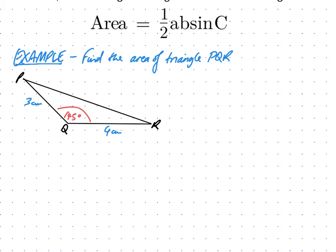So let's fill in that formula. Area equals 1/2 A, we're going to make that the left one, 3. B, we're going to make that the right one, 4, times by sine of the angle C, which was 145 degrees.